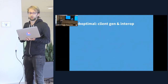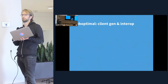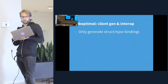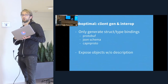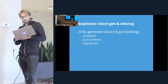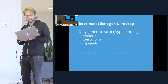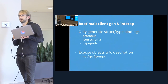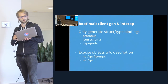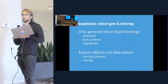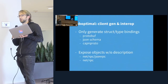The next desirable property is being able to generate clients and interoperability with different languages. One simple solution would be to generate type bindings using something like Protobufs, JSON Schema, or Cap'n Proto. But that only gets you the schema — it doesn't really help with the actual transport. An alternative is just exposing objects without defining a schema, which is what you see with the native RPC packages in Go. That works fine between Go things, but it doesn't get you far with other kinds of clients, and there's a lack of discoverability — you need to know all the names of the objects in advance.